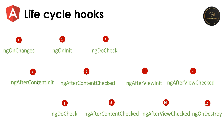Then we have ngAfterContentInit. This is called only once after Angular has fully initialized all the content projected into the component using the ng-content tag. Using this hook, you can perform actions after the component's content using ngContent is initialized. ngAfterContentChecked is called after Angular has checked the projected content in the component, and it is invoked every time after ngDoCheck is triggered.